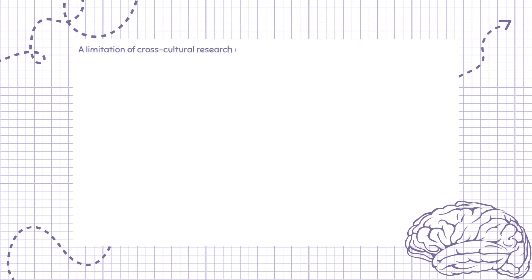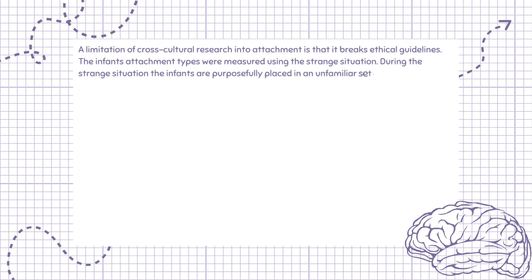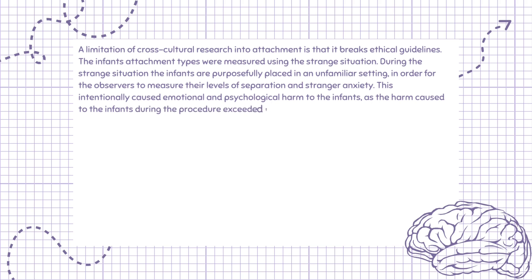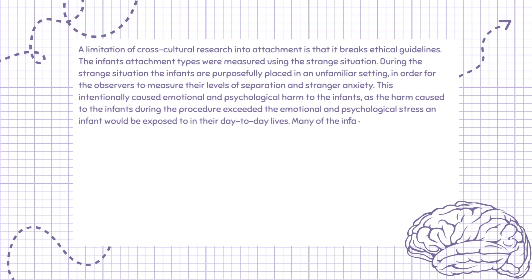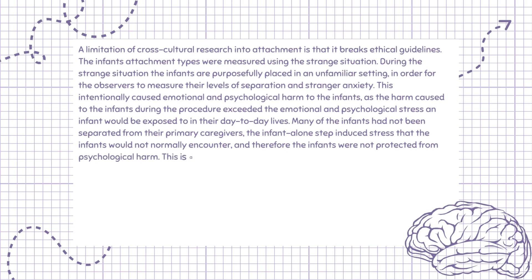A limitation of cross-cultural research into attachment is that it breaks ethical guidelines. The infants' attachment types were measured using the strange situation, during which infants are purposefully placed in an unfamiliar setting in order for observers to measure their levels of separation and stranger anxiety. This intentionally caused emotional and psychological harm, as the harm exceeded the stress an infant would be exposed to in their day-to-day lives. Many of the infants had not been separated from their primary caregivers, so the 'infant alone' step induced stress they would not normally encounter, meaning infants were not protected from psychological harm.